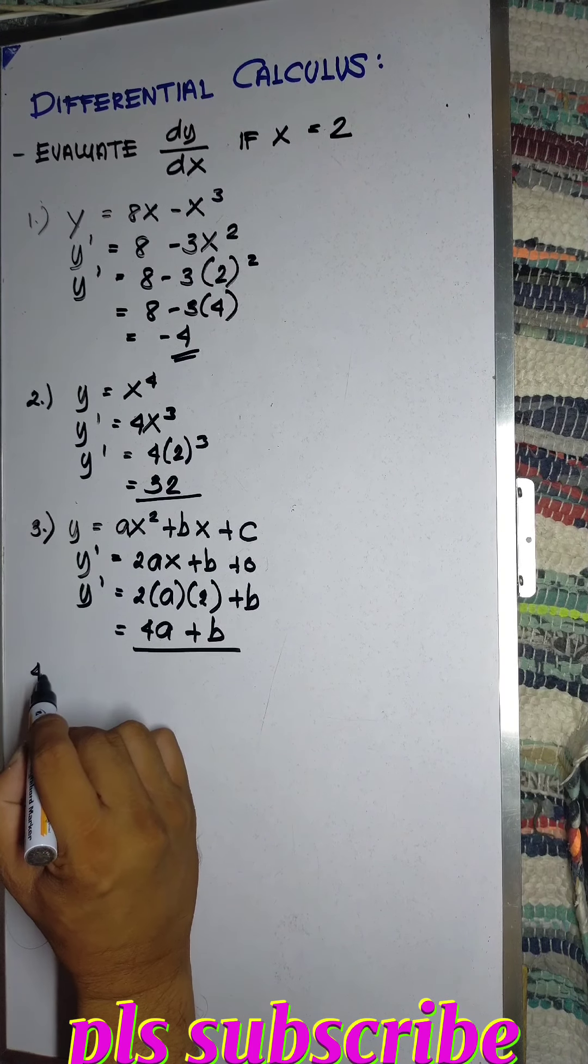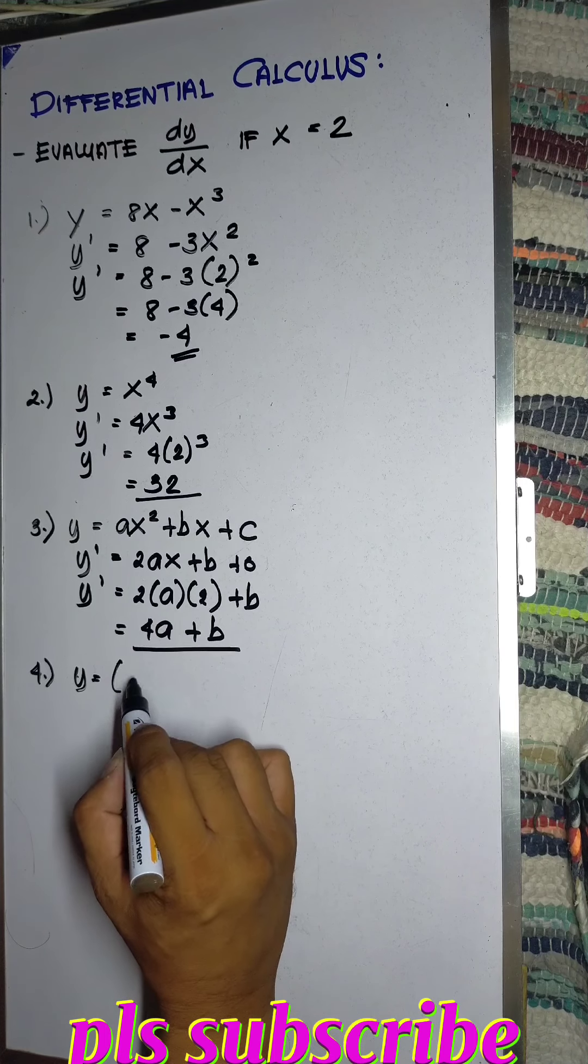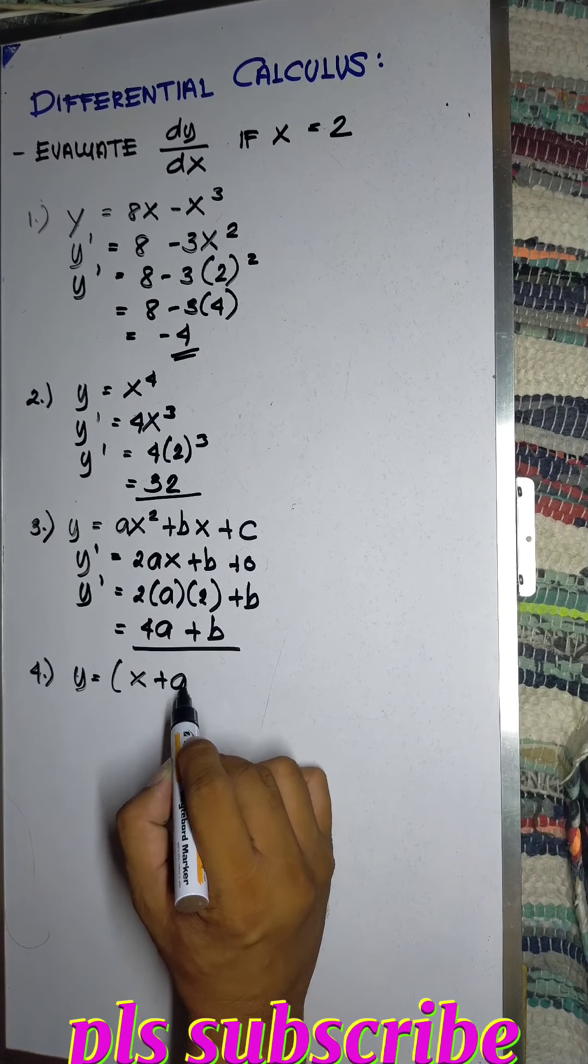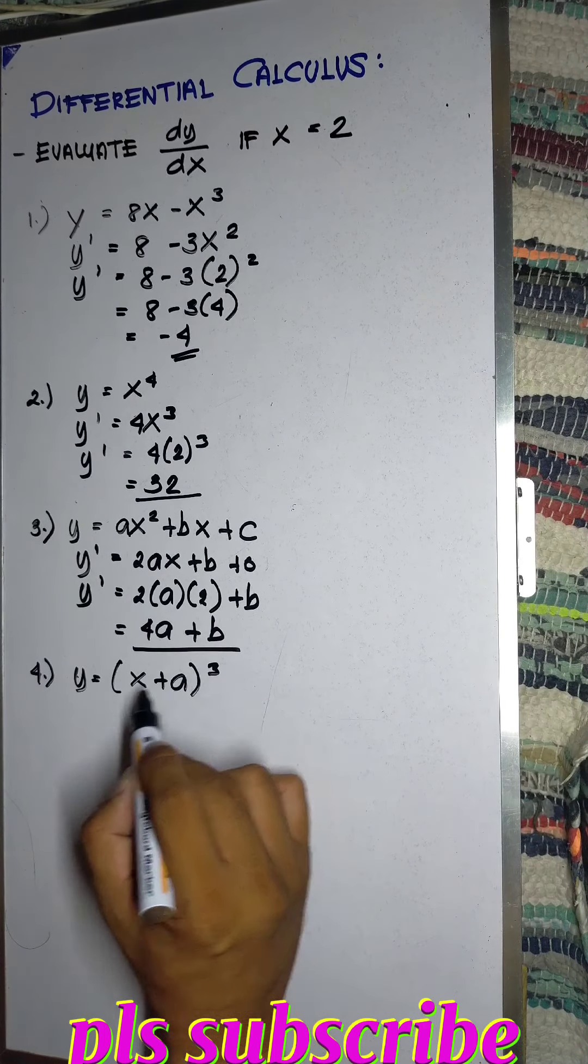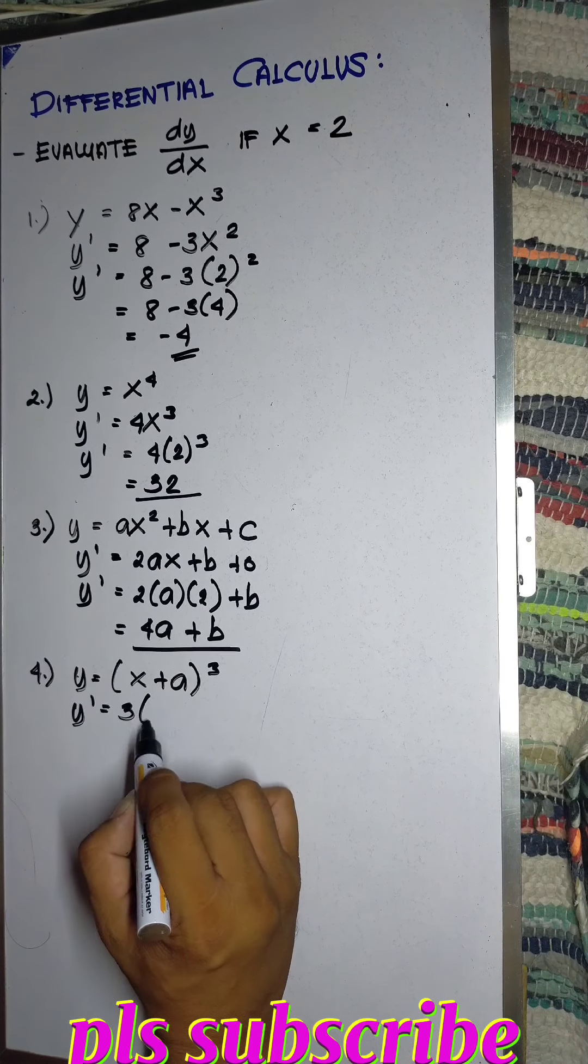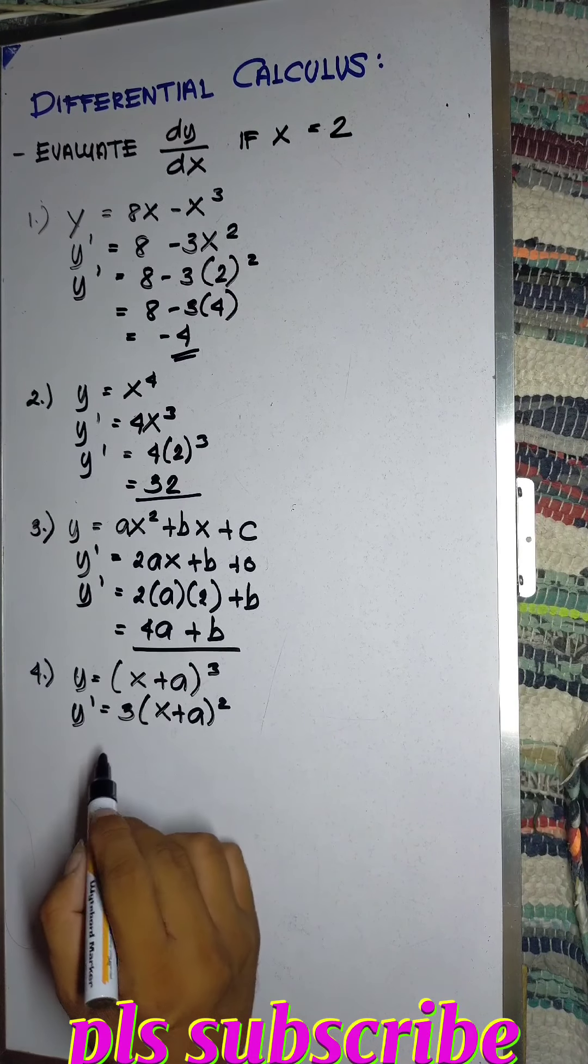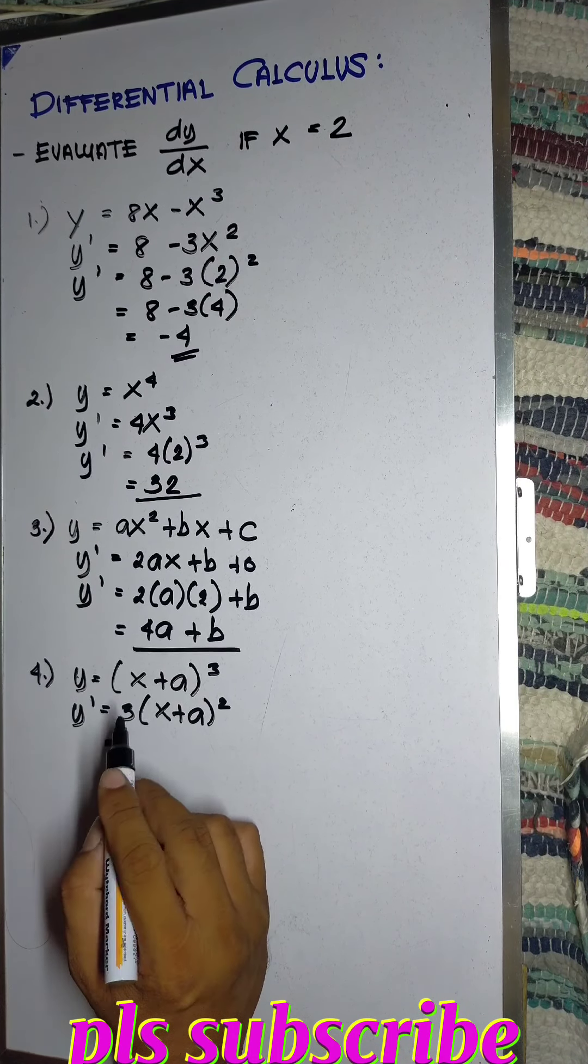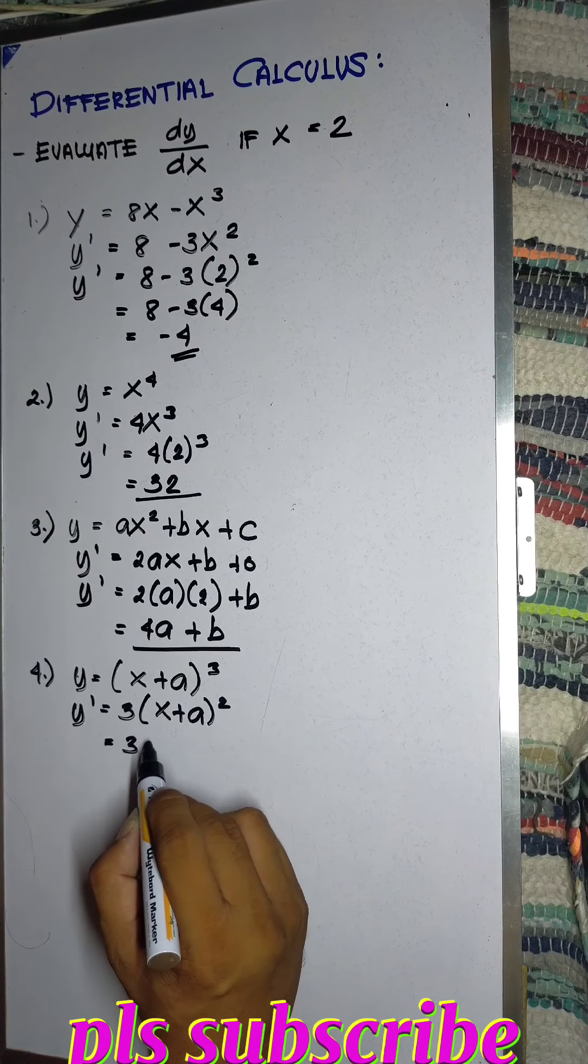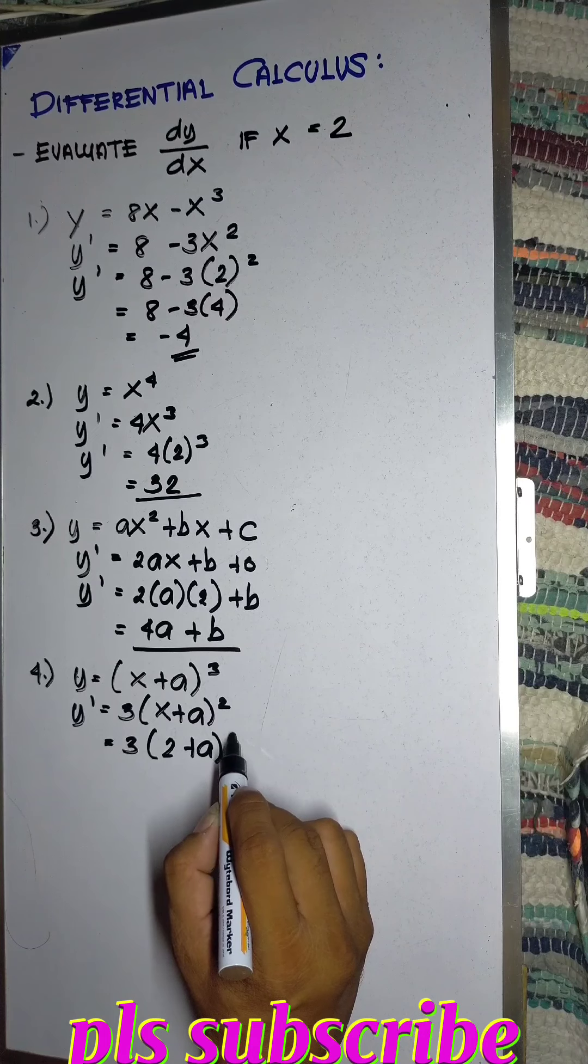Number 4, y equals (x plus a) cubed. So the derivative dy/dx equals 3 times (x plus a) squared. So that will be 3 times (2 plus a) squared.